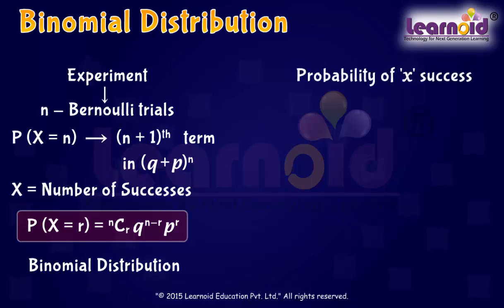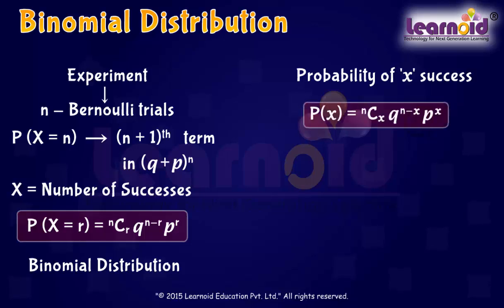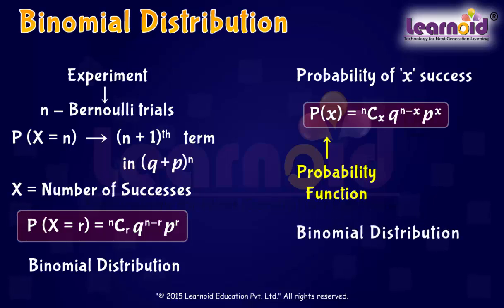This probability distribution of successes is known as binomial distribution with parameters N and P. The probability of X equal to x is called the probability function of the binomial distribution. The binomial distribution with N Bernoulli trials and probability of success in each trial P is denoted by B(N, P).